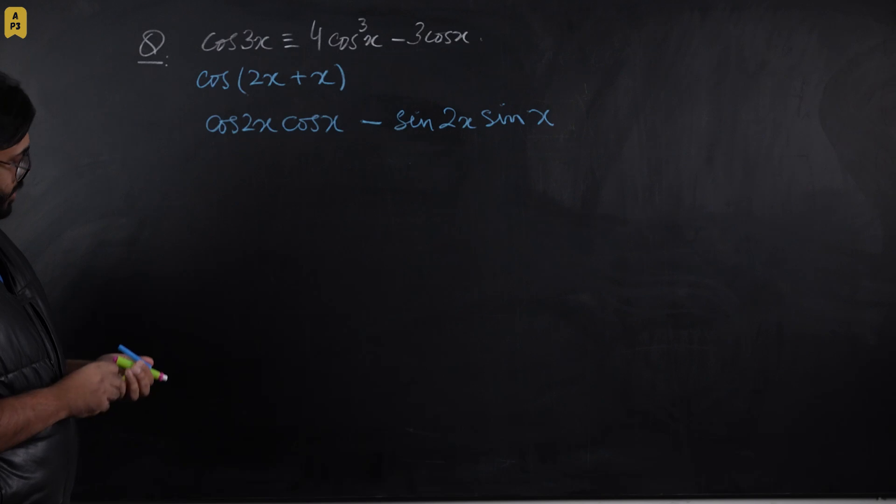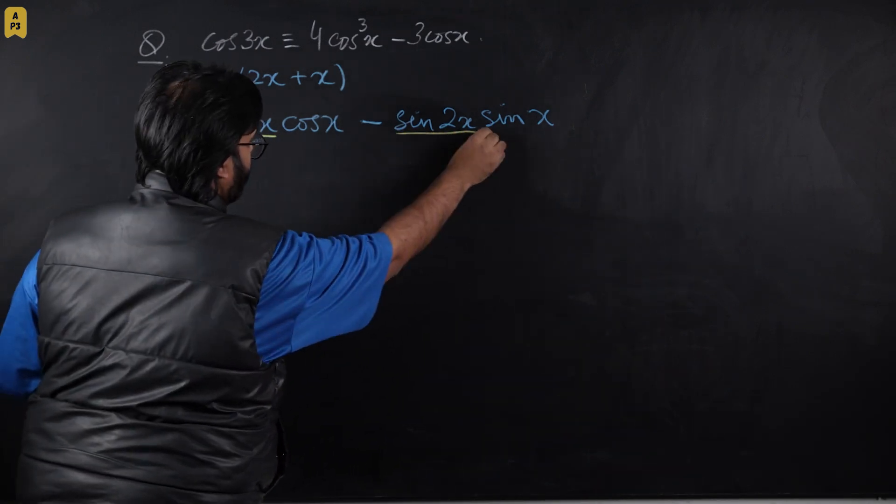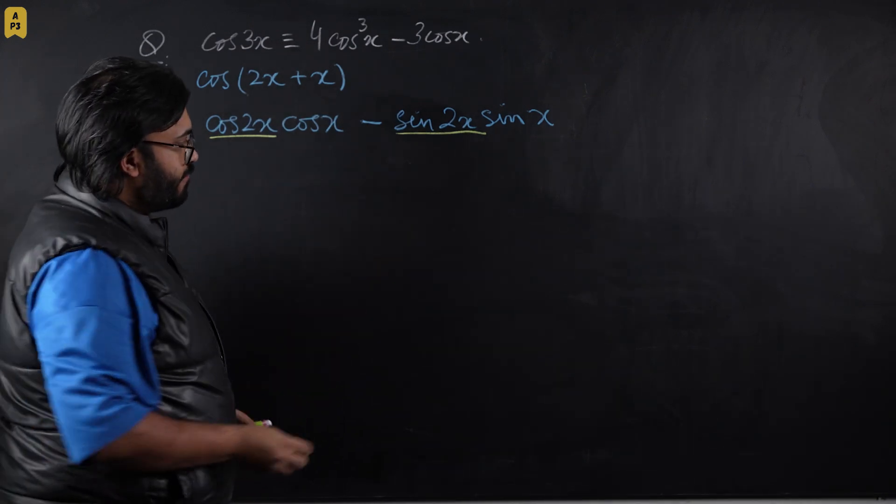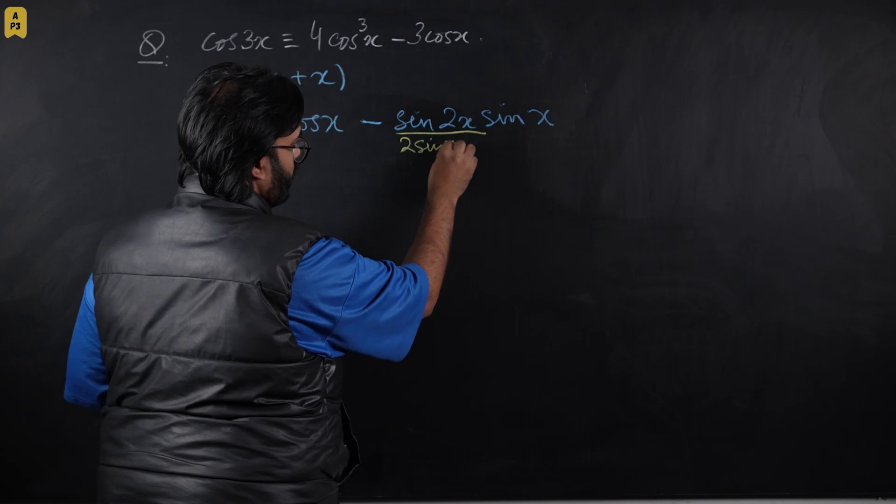Now we'll focus on the terms with the double angle. For sin 2x, we only have one option available, and that is 2sin x cos x.